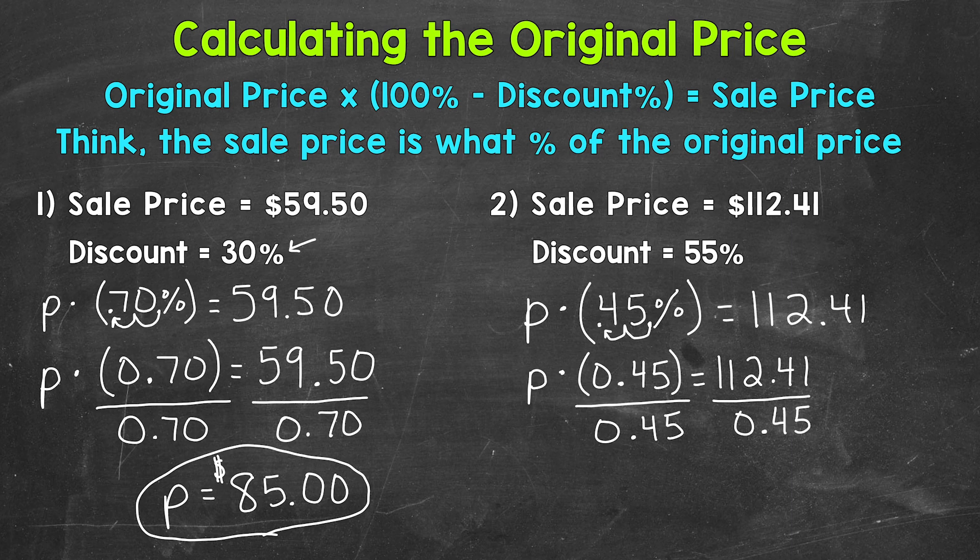And that gives us our original price. So P is now isolated. And we have $112.41 divided by 0.45. And that gives us $249.80.